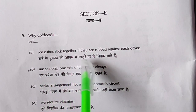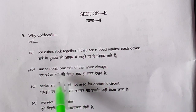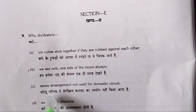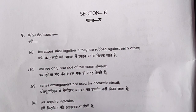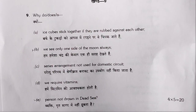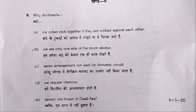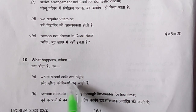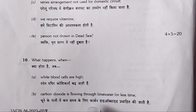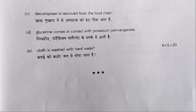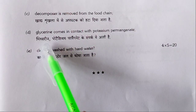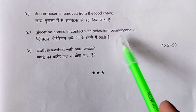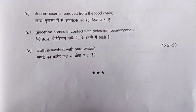Section E: Why do ice cubes stick together if they are rubbed against each other? Why do we see only one side of the moon always? Why is series arrangement not used for domestic circuits? Why do we require vitamins? Why does a person not drown in the Dead Sea? What happens when white blood cells are high? When carbon dioxide is passed through lime water for a short time. When a decomposer is removed from the food chain. When glycerin comes in contact with potassium permanganate. When cloth is washed with hard water.